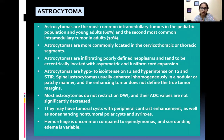Astrocytoma is the most common intramedullary tumor in the pediatric population and young adults, and second most common intramedullary tumor in adults. They are more commonly located in the cervicothoracic or thoracic segments. Astrocytomas are infiltrating, poorly defined neoplasms and tend to be eccentrically located with asymmetric and fusiform cord expansion.